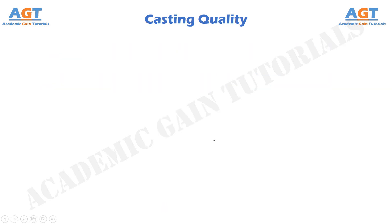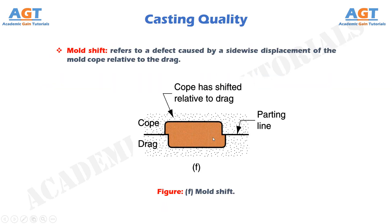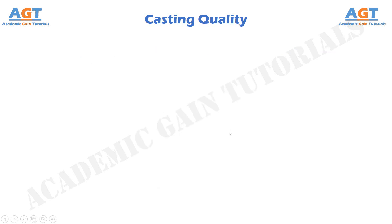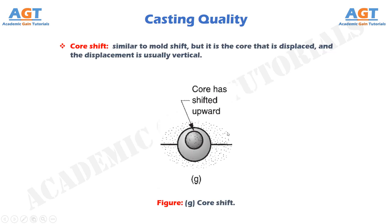Mold shift refers to a defect caused by a sidewise displacement of the mold cope relative to the drag. Core shift is similar to mold shift, but it is the core that is displaced, and the displacement is usually vertical.